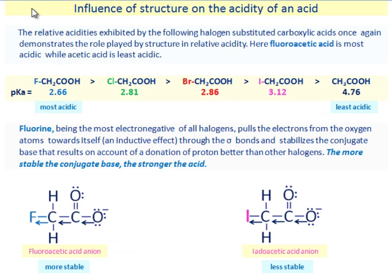The relative acidity exhibited by the following halogen substituted carboxylic acids once again demonstrates the role of structure in relative acidity. Here fluoroacetic acid is most acidic while acetic acid is least acidic.